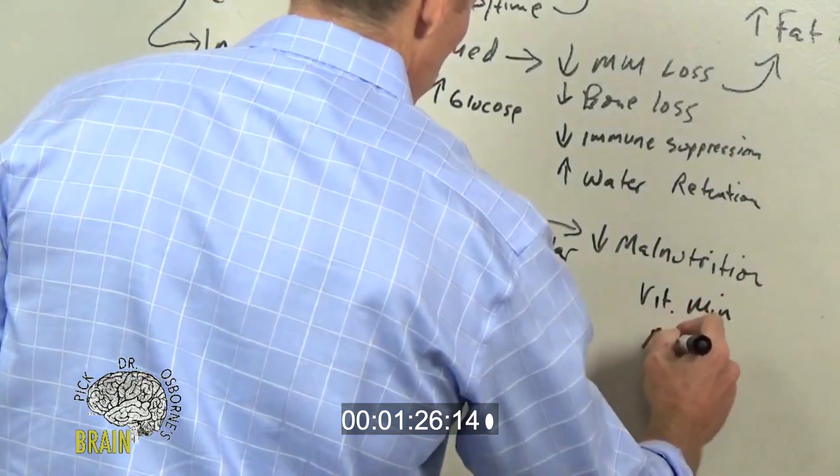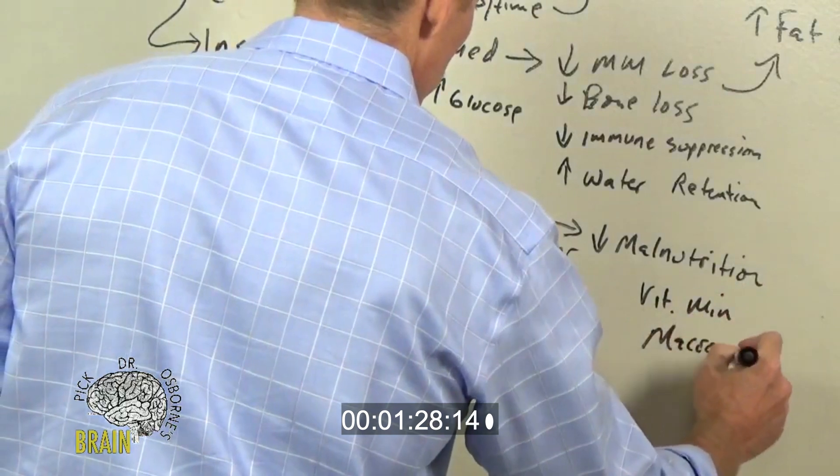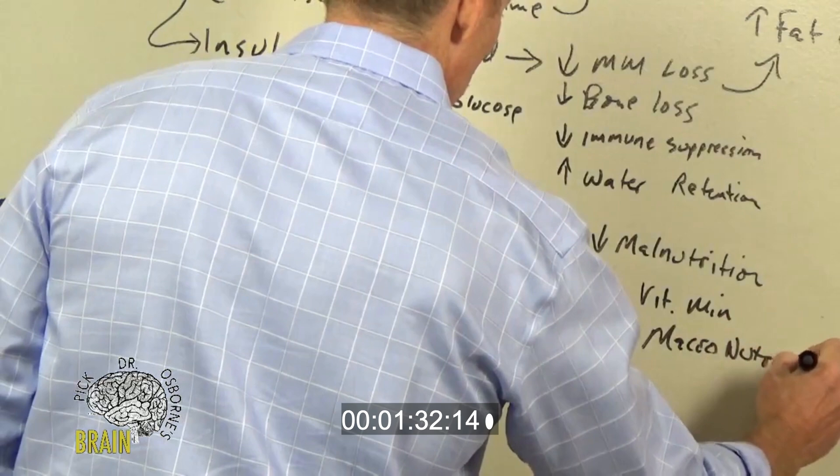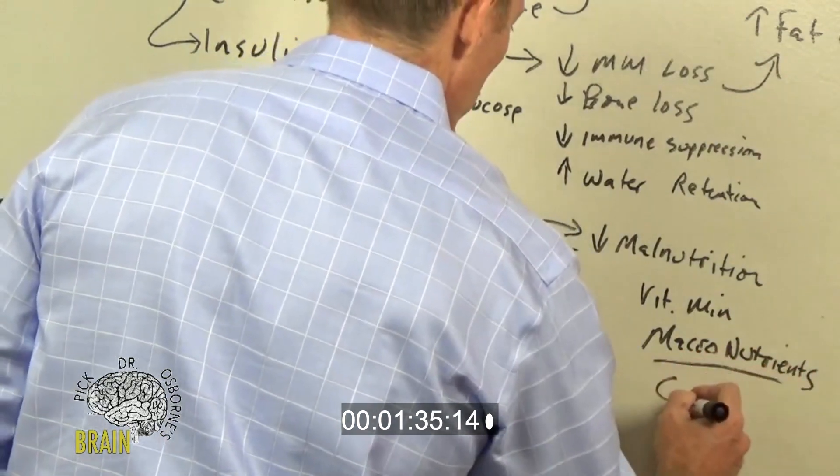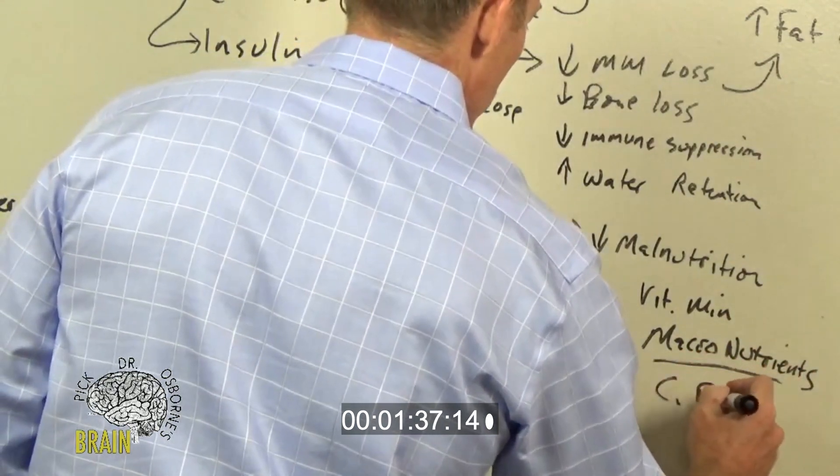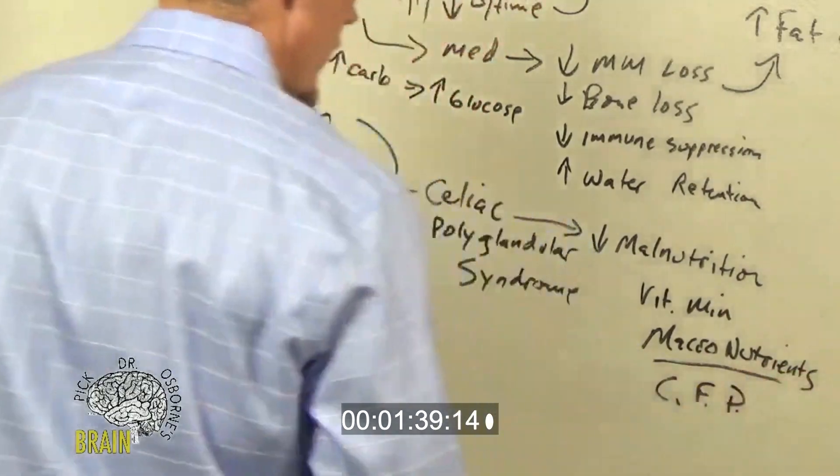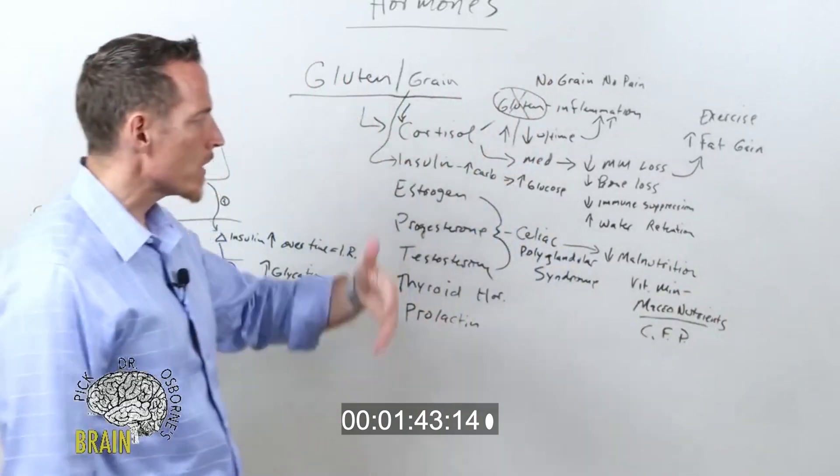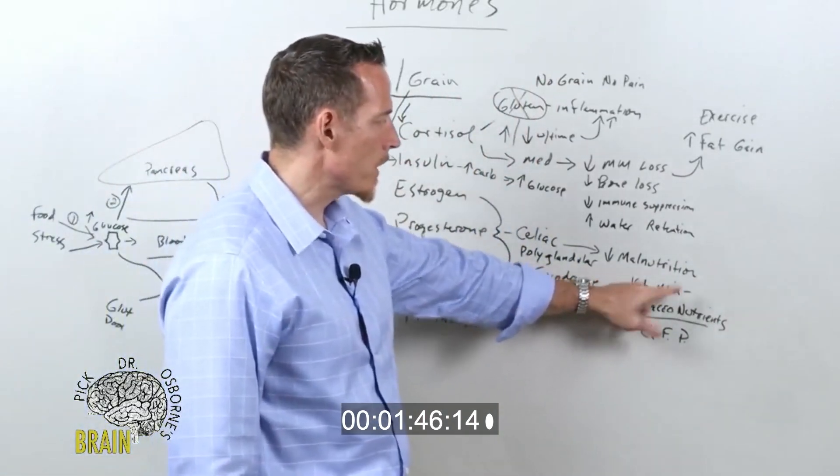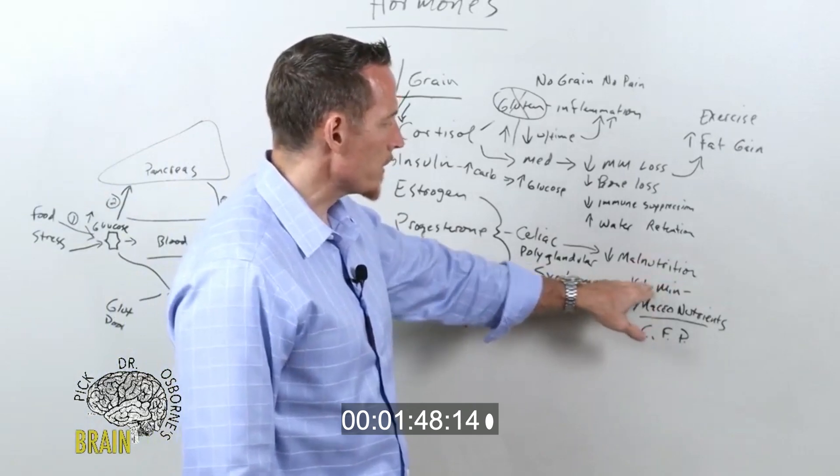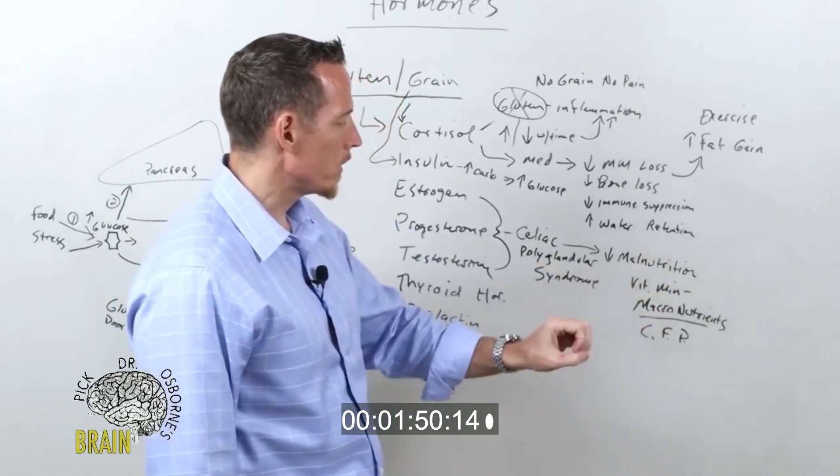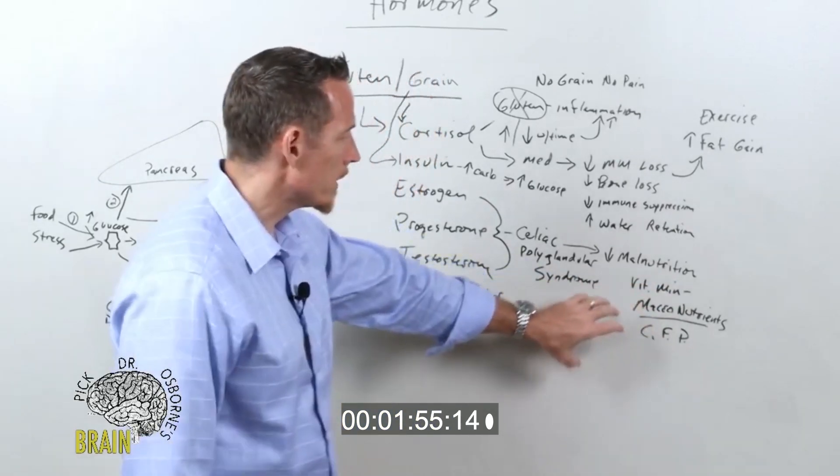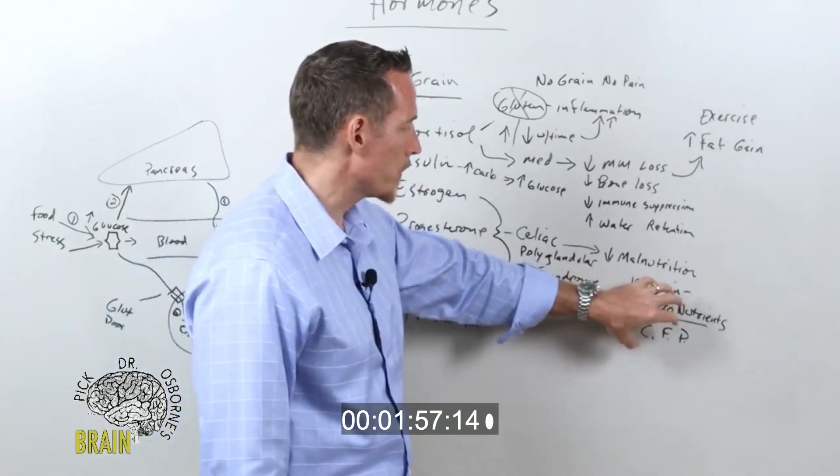Minerals, and then what are called macronutrients. Macronutrients are carbs, fats, and proteins. Vitamins and minerals are your vitamin C, your fat-soluble vitamins like A, D, E, and K, your minerals. These are called micronutrients, meaning they're very small. Your macronutrients are your carbs, fats, and proteins.